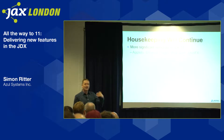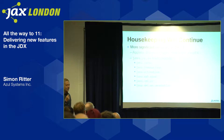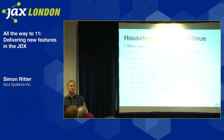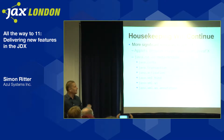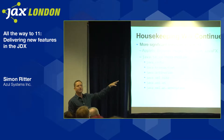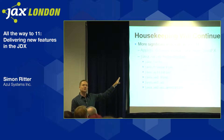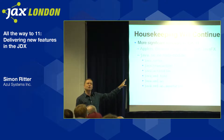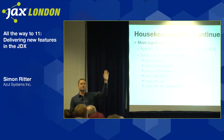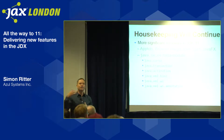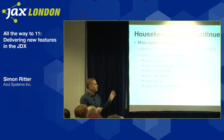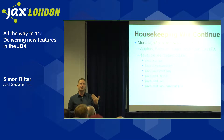Continuing the housekeeping in JDK 11: they removed Applets, the browser plugin, Web Start, and JavaFX. They also removed the java.se.ee aggregator module — which includes CORBA, the Beans activation framework, JAX-B for XML binding, and JAX-WS for SOAP-based web services. These were deprecated in JDK 9 where you could turn them back on; in JDK 11 they have gone completely. You now need to install a different module from Maven Central, a reference implementation, or elsewhere.